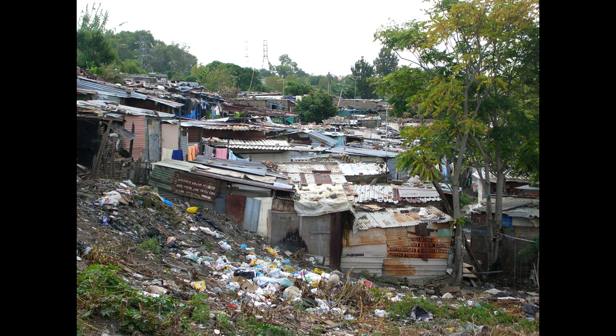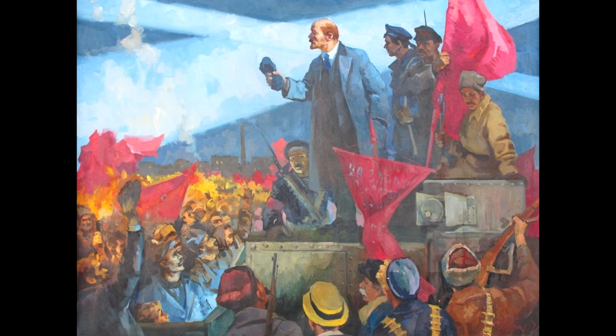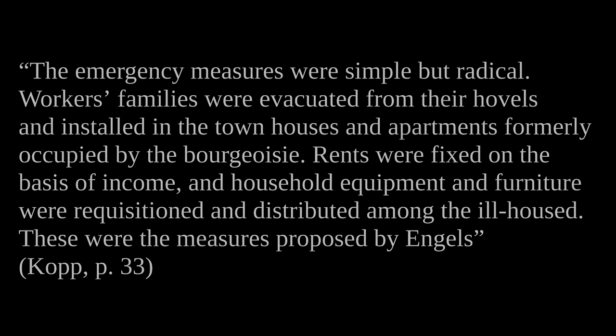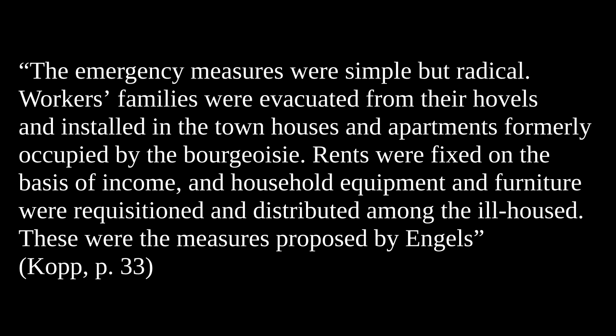Only with the October Revolution did things begin to change. First housing measures of the Bolshevik government. After taking power in the October Revolution, the Bolsheviks immediately began to address the problem of homelessness and the terrible living conditions. They took immediate emergency measures. Capitalist writer Anatole Kopp says: "The emergency measures were simple but radical. Workers' families were evacuated from their hovels and installed in the townhouses and apartments formerly occupied by the bourgeoisie. Rents were fixed on the basis of income, and household equipment and furniture were requisitioned and distributed among the ill-housed. These were the measures proposed by Engels."